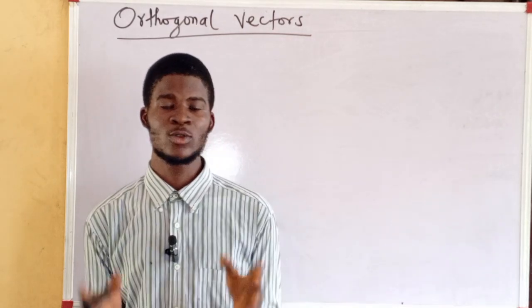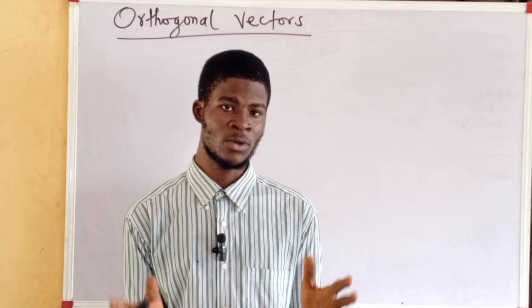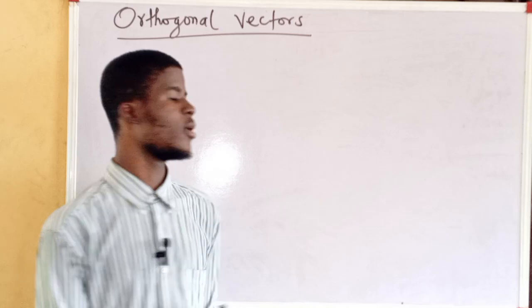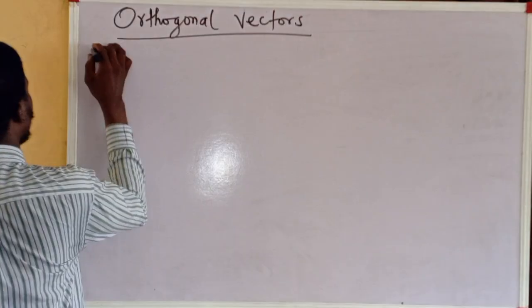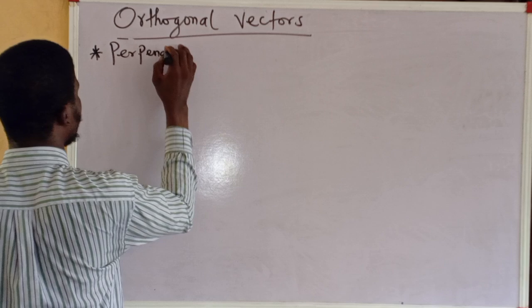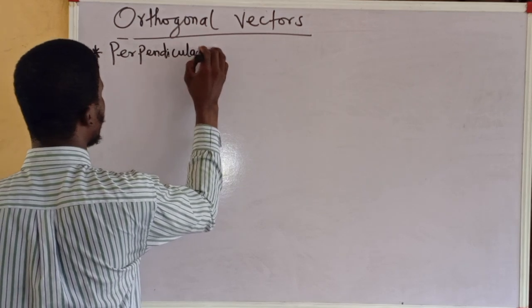Orthogonal vectors are two vectors that are perpendicular to each other. Two vectors that are perpendicular to each other.